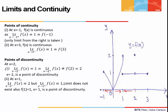Let's look at x = 2. When x approaches 2 from the left, the function moves towards 1, so the limit from the left is 1. When we approach 2 from the right, the function also approaches 1, so both one-sided limits equal 1. However, the function value at x = 2 is given to be 2. Since the limit and function value are not equal, x = 2 is a point of discontinuity.